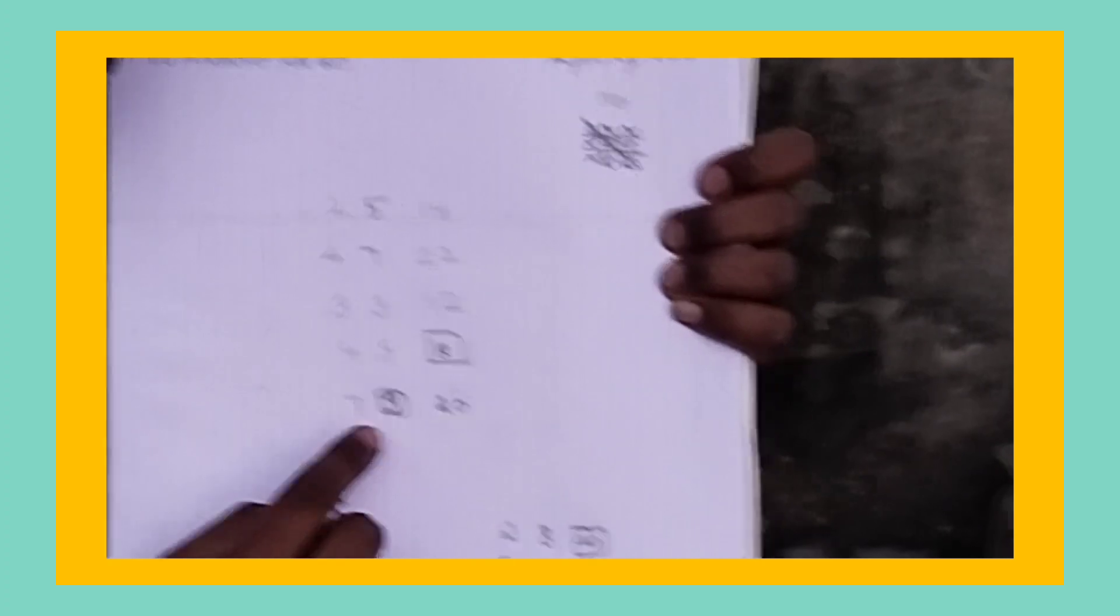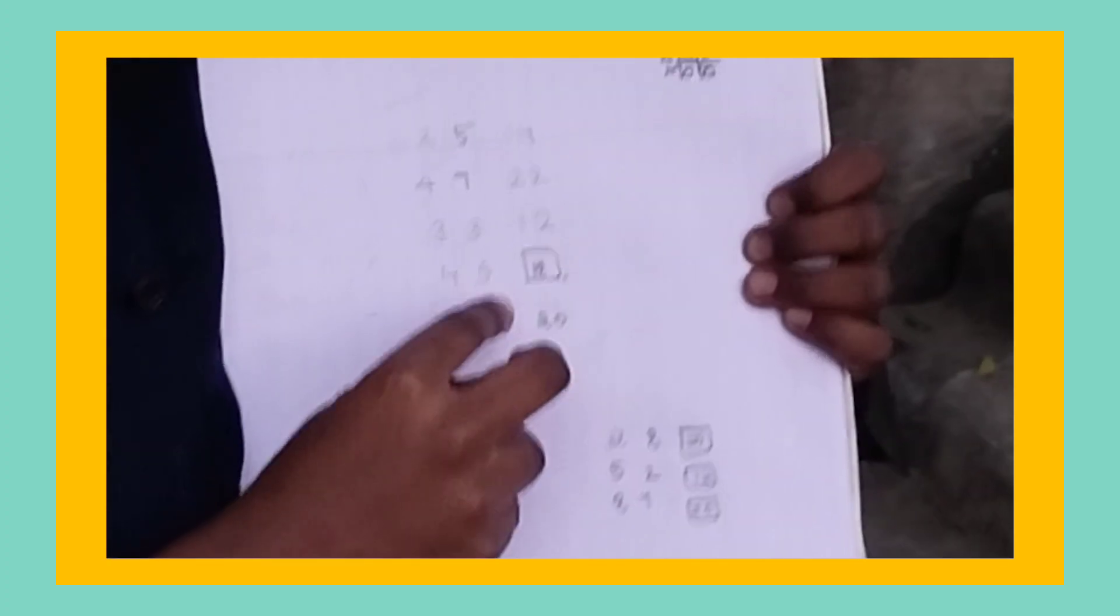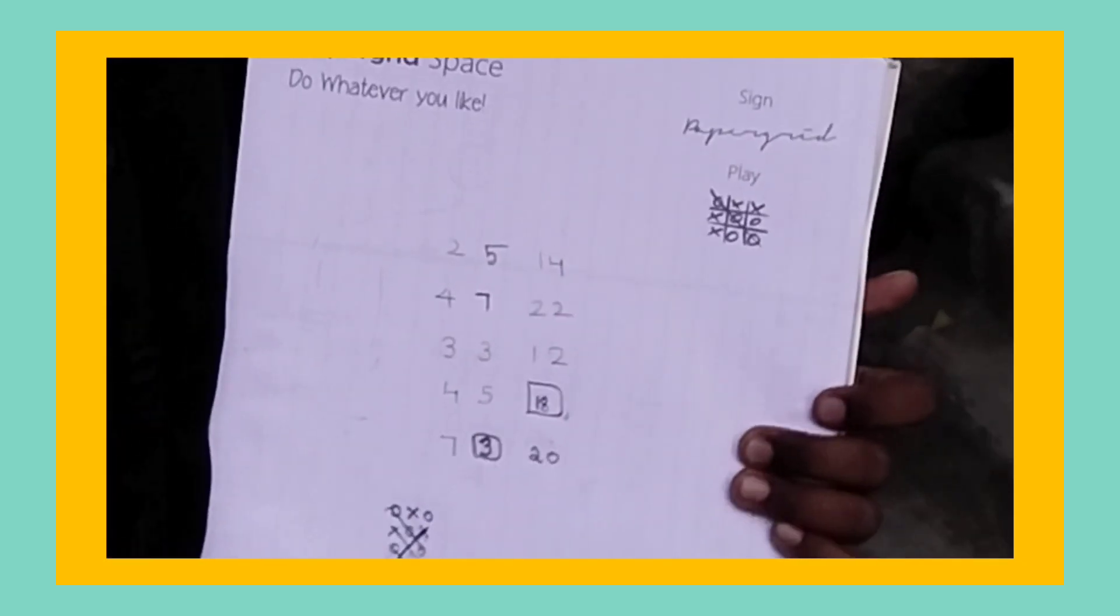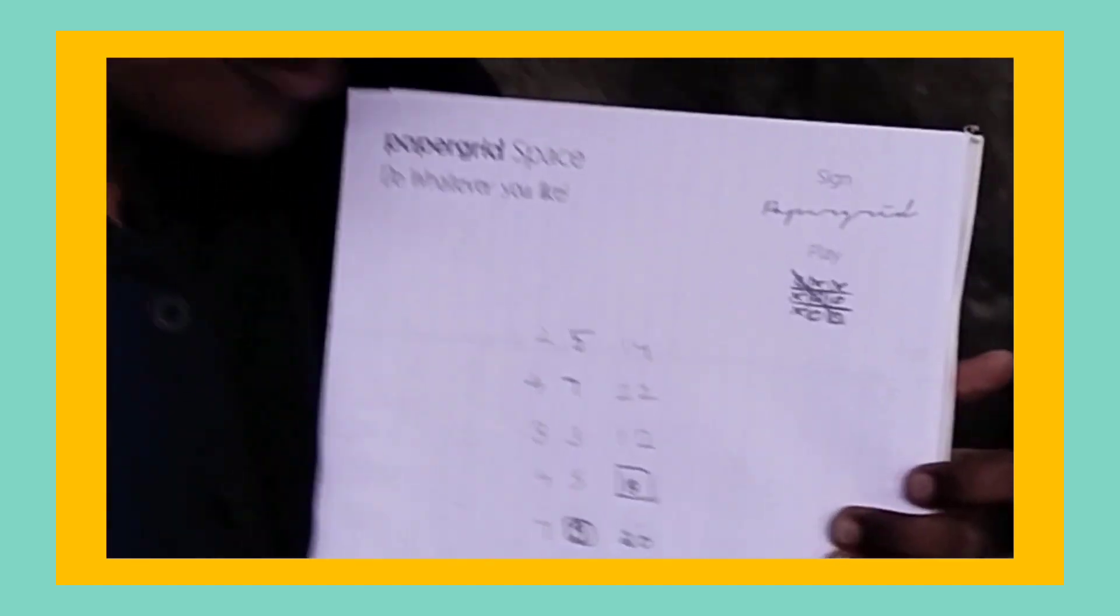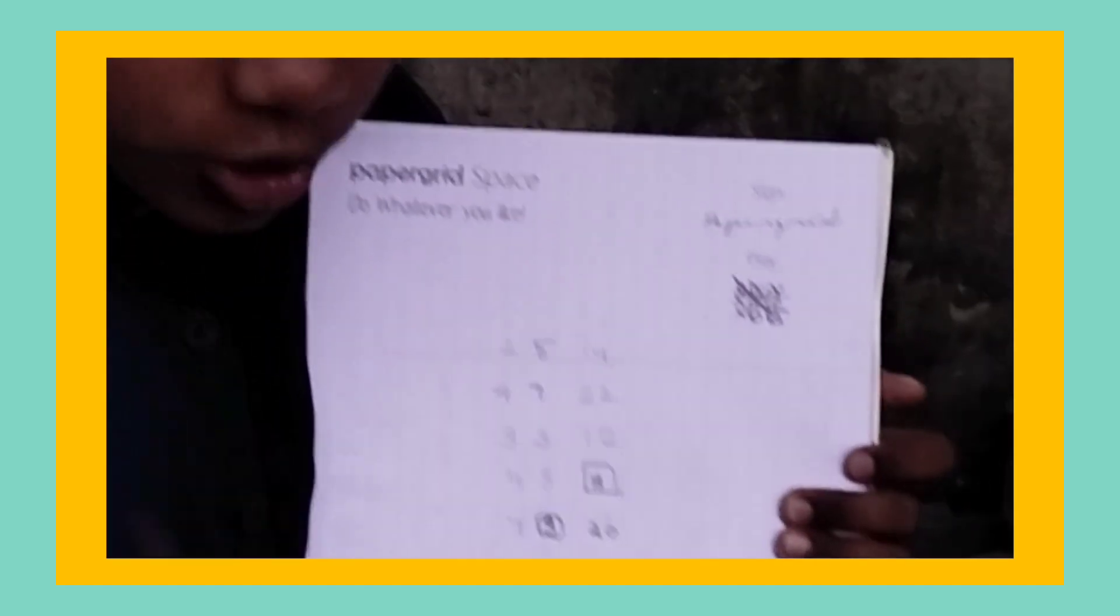7 plus 3. 7 and 3 round up to 10. So I tell again, we have to multiply this one, only the two tables. So 2 tens are 20.